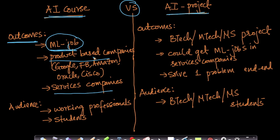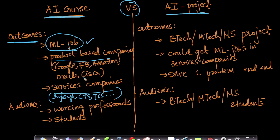Some examples of product-based companies are Google, Facebook, Amazon, Oracle, Cisco, etc. If your objective is to get a machine learning job in product-based or services companies — examples of services companies being Infosys, Cognizant, TCS, etc. — then you're recommended to take the Applied AI course, because that's how this course has been designed.